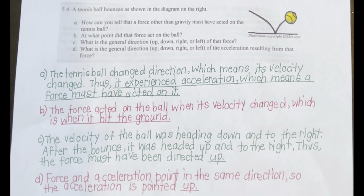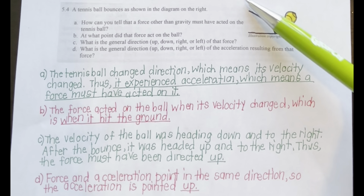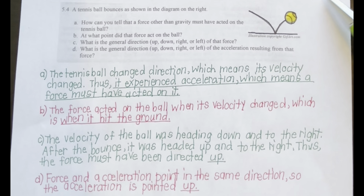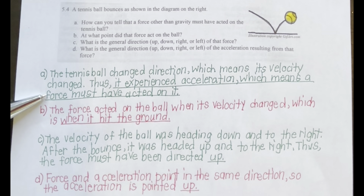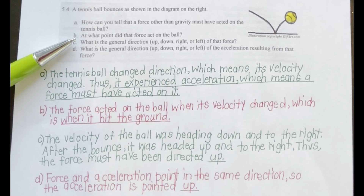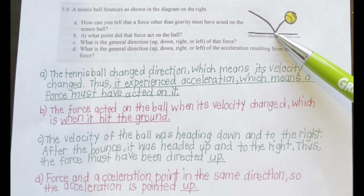On Your Own 5.4: A tennis ball bounces as shown in the diagram on the right. It started here, hit the ground here, and is going this way. A) How can you tell that a force, other than gravity, must have acted on the tennis ball? The tennis ball changed direction, which means its velocity changed. Thus, it had to have experienced acceleration, which means a force must have acted on it. B) At what point did the force act on the ball? The force acted on the ball when its velocity changed, which is exactly when it hit the ground.